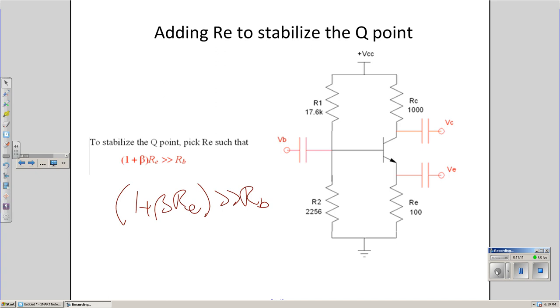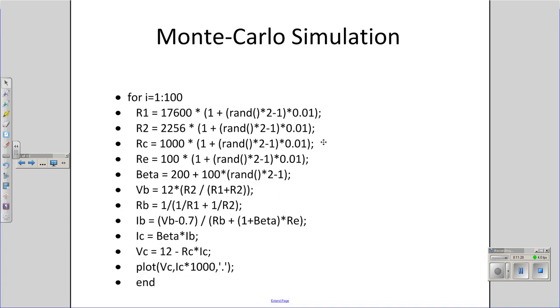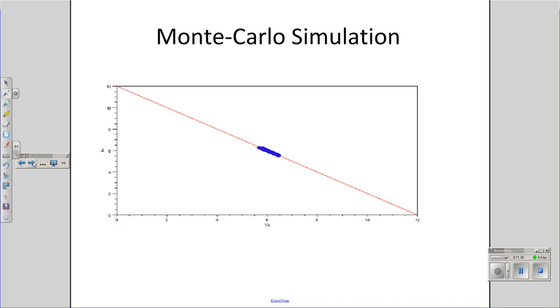Now that you've got that, let's see what happens when you vary beta. Okay, let's do a Monte Carlo simulation. I'm going to let all the resistors vary by 1%. Let beta vary by 100. Calculate the voltages, resistances, and plot them. Plot the voltage and current on a load line. Looks like this.